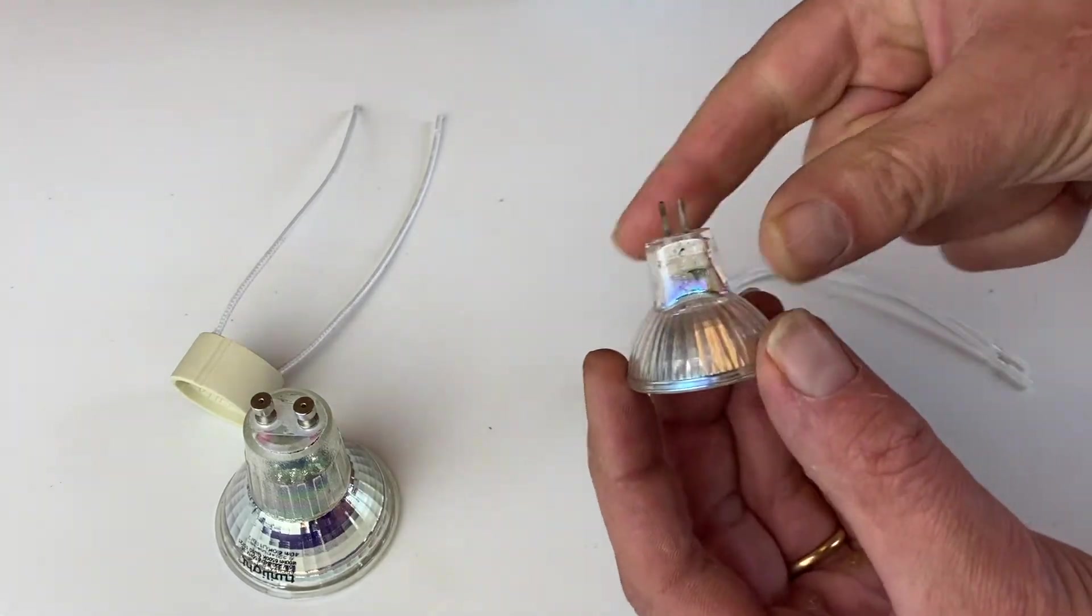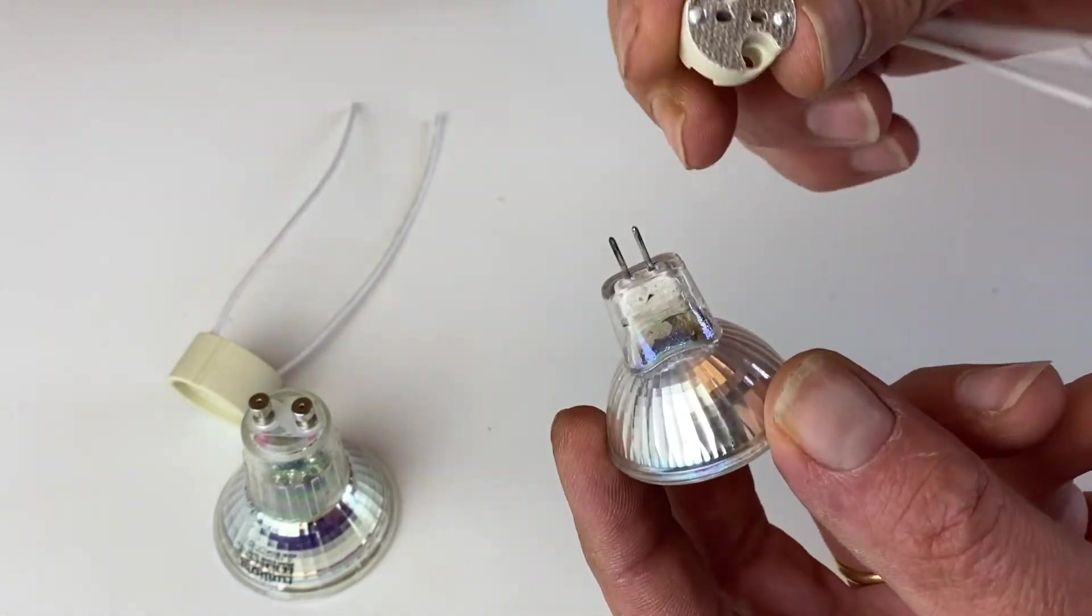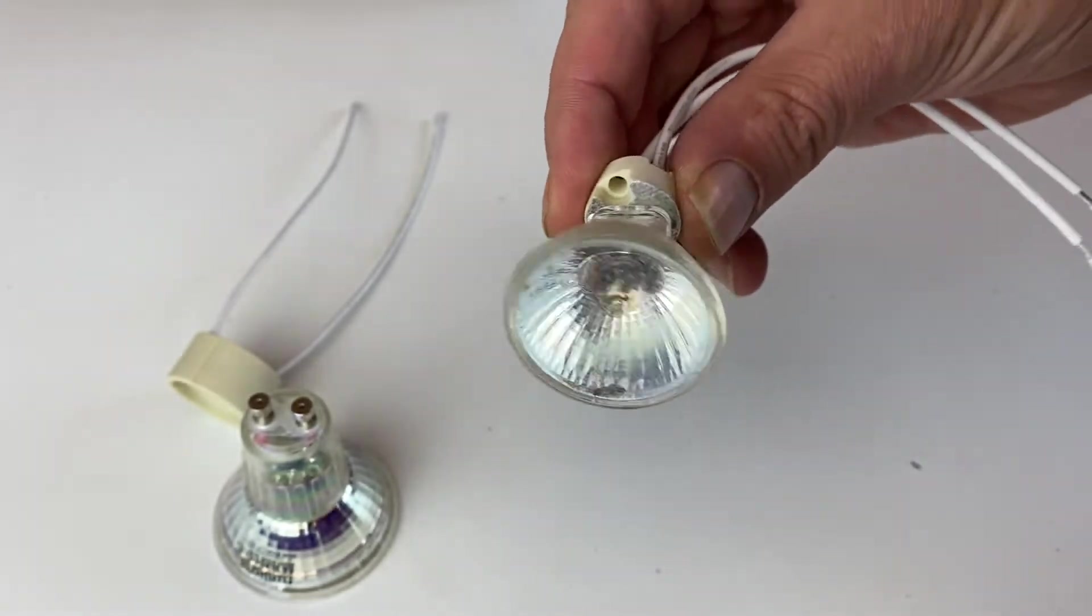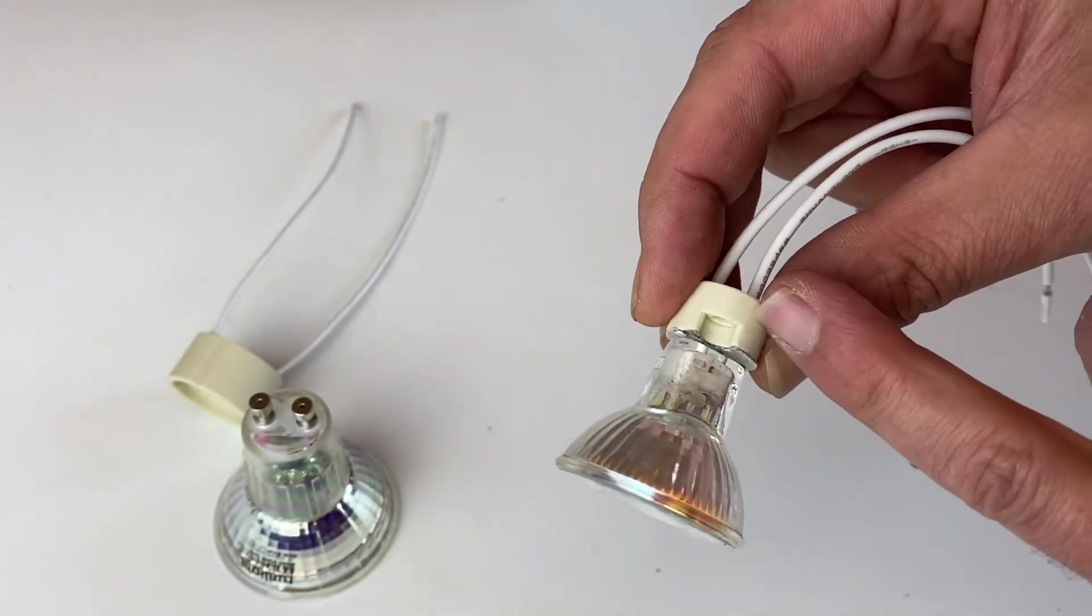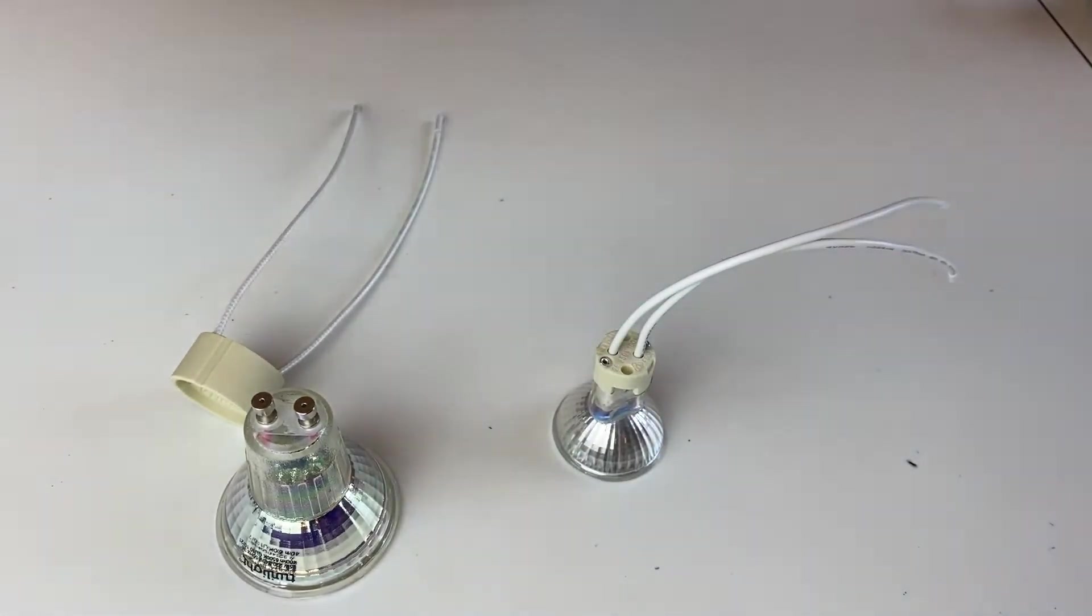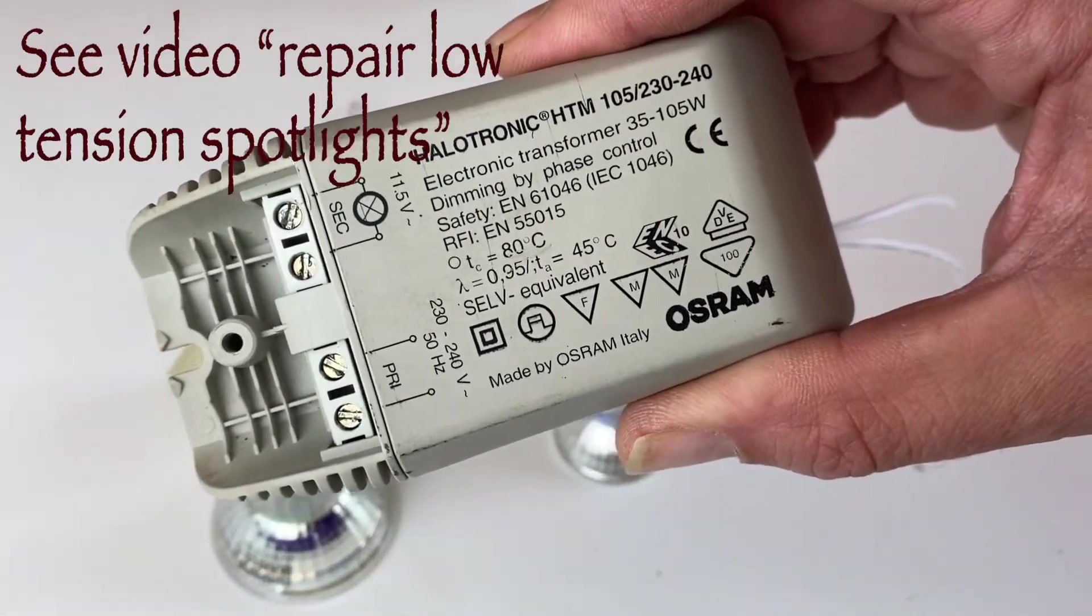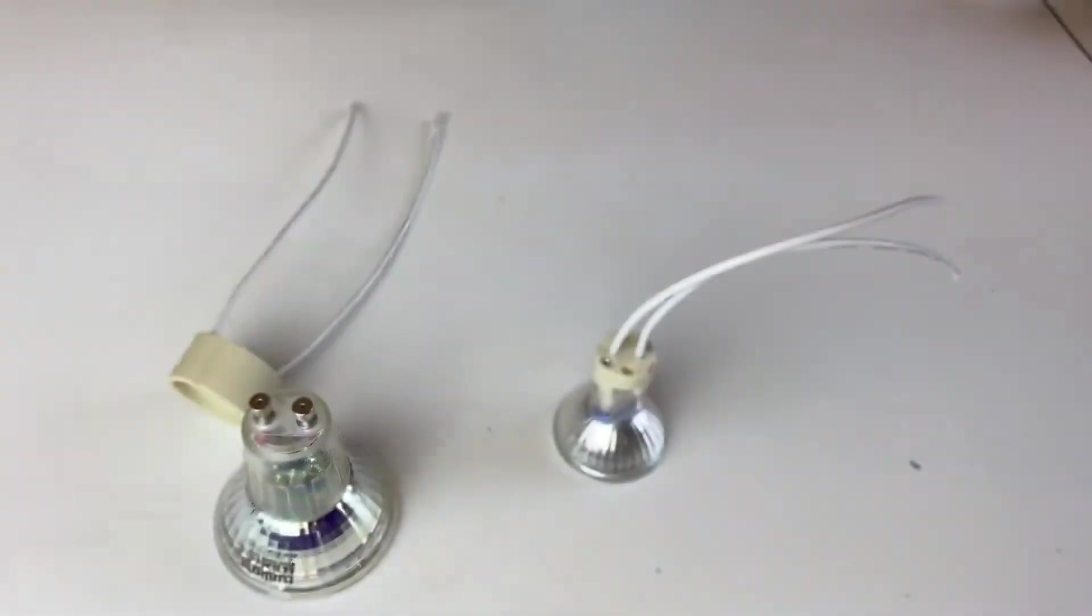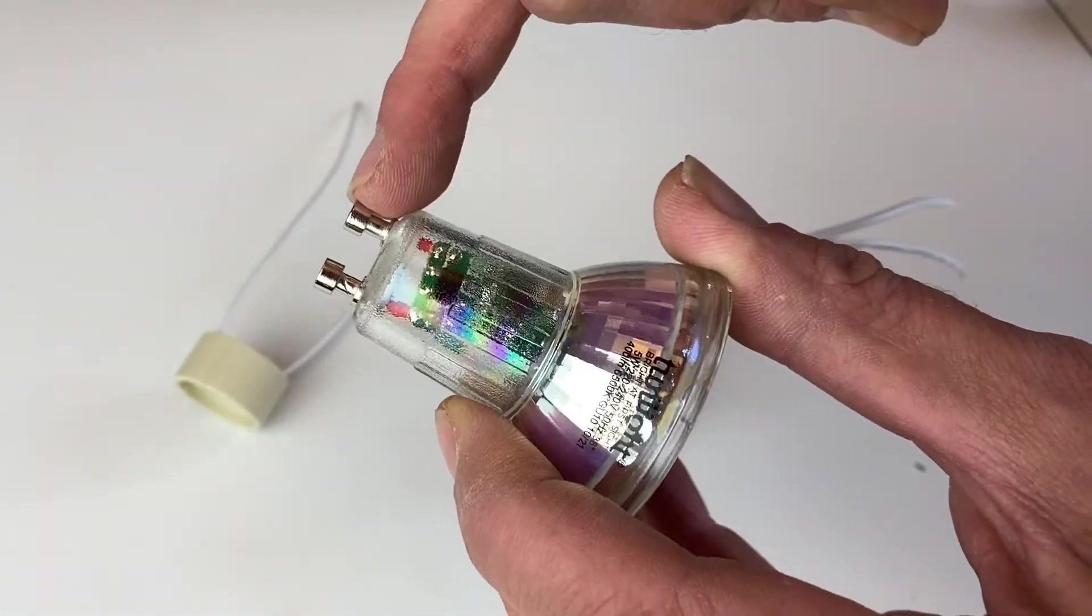This model has these two needles on the top, so for inserting into the socket you just push them inside like this. But be careful, this type of socket is for low tension, which means that you will have to use a transformer. And on the video that I made, I could see that there was one transformer used for two bulbs.